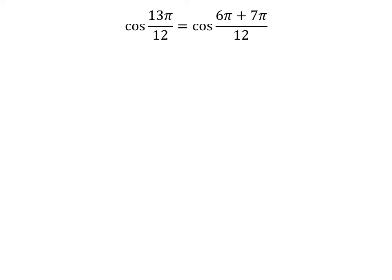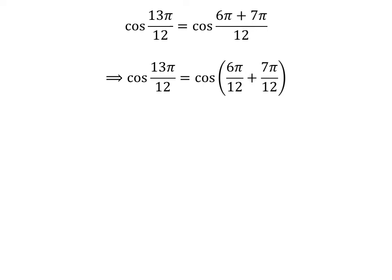13 times pi is equal to 6 times pi plus 7 times pi. So cosine of 13 times pi upon 12 is equal to cosine of 6 times pi plus 7 times pi upon 12. The fraction can be expressed as the sum of two fractions: cosine of 13 times pi upon 12 is equal to cosine of 6 times pi upon 12 plus 7 times pi upon 12.